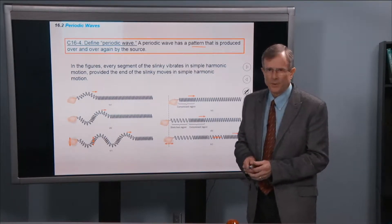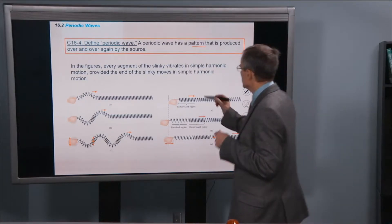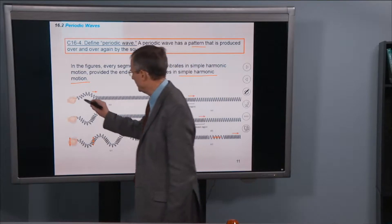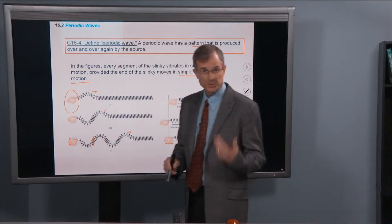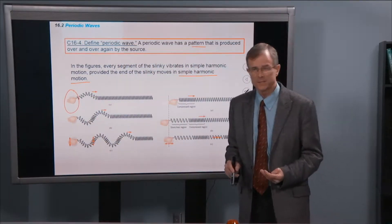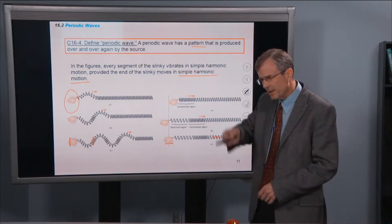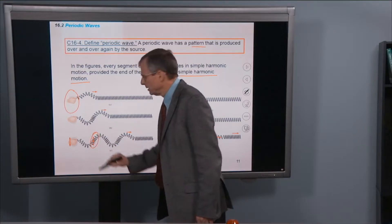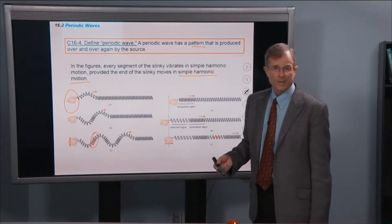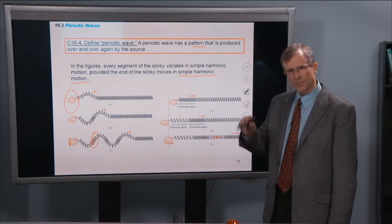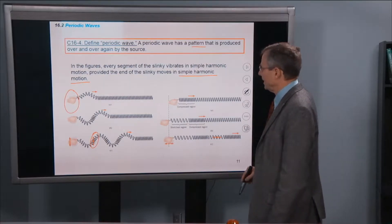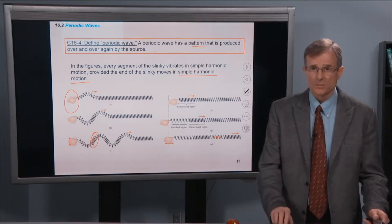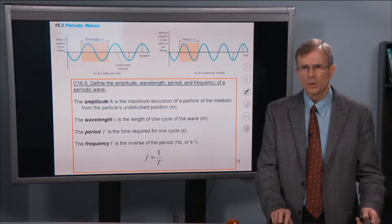Or you can do it in a jerky motion like this. As long as you do it over and over again, you get a periodic wave. So if the slinky moves in simple harmonic motion, my hand moving up and down like we talked about simple harmonic motion last semester, it's moving up in a nice smooth sinusoidal pattern, then every point along the slinky will also vibrate in that same simple harmonic motion pattern. And that's all a periodic wave is. It's where you're repeating the same motion over and over.